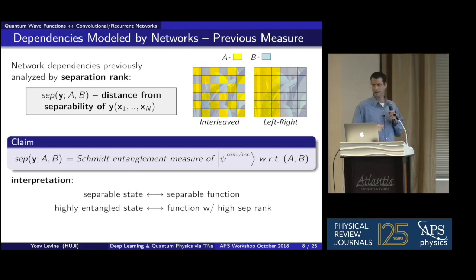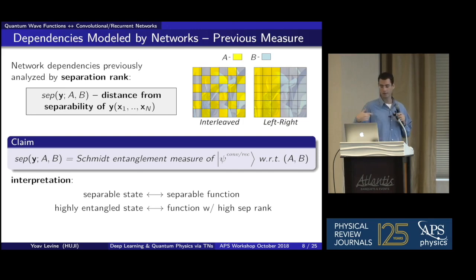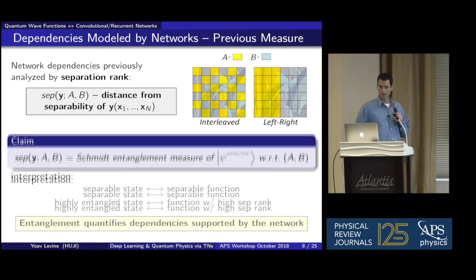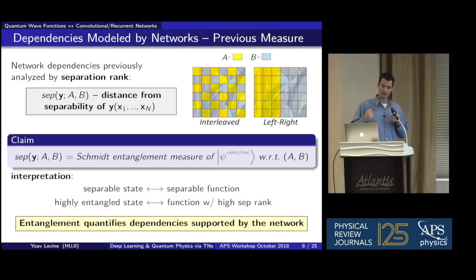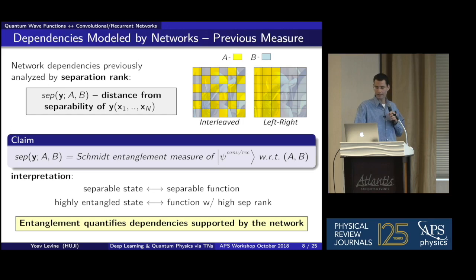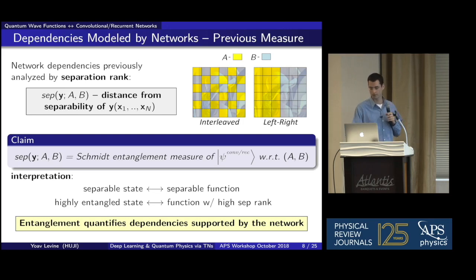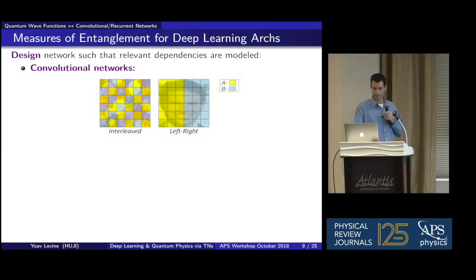If psi is completely separable with respect to a partition, then the function realized by the network is completely separable, and the higher the separation rank, the more entangled our surrogate psi will be. This brings forth entanglement measures of the constructed state as quantifiers of dependencies modeled by deep networks. We also know entanglement measures more sensitive than the rank measure, such as entanglement entropy, which is more sensitive to the amplitudes of the singular values — allowing us to refine previously proposed measures.